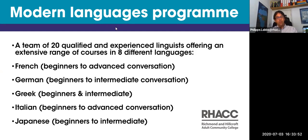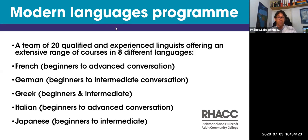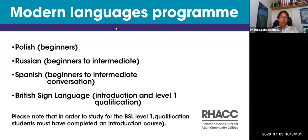In German, we do beginners to intermediate conversation, which is the equivalent of five different levels. In Greek, we have a year four course but also a new beginners starting in September. In Italian, more or less the same provision as French — courses from beginners to advanced conversation. In Japanese, we'll be offering four different levels in September for the first time in quite some time, which is something to be really proud of. In Polish, which we're relaunching in September, one of our French teachers is also a bilingual Polish-French speaker and is very keen to start that course.